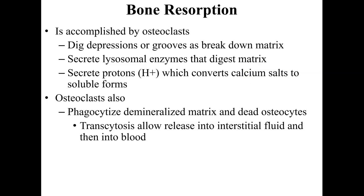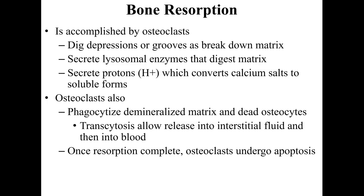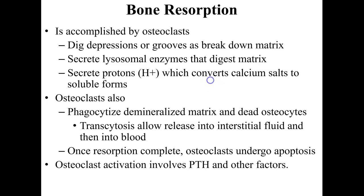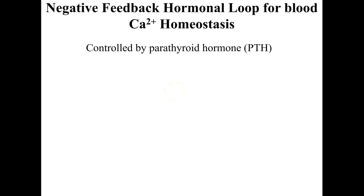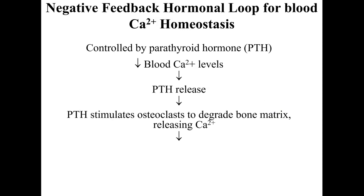Osteoclasts use transcytosis — entering one side of the cell, passing through, and exiting the other side — allowing release into interstitial fluids and then into the blood. Once reabsorption is complete, osteoclasts undergo apoptosis, a regulated cell suicide. With the negative feedback loop for calcium homeostasis: when blood calcium drops, PTH is released, stimulating osteoclasts to degrade bone matrix and release calcium into the bloodstream. Blood calcium levels rise, and PTH release ends.